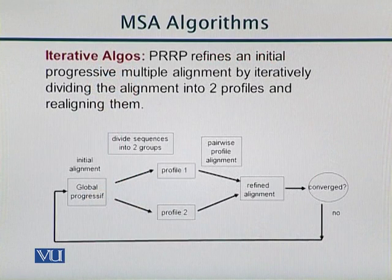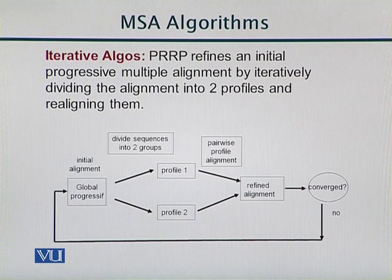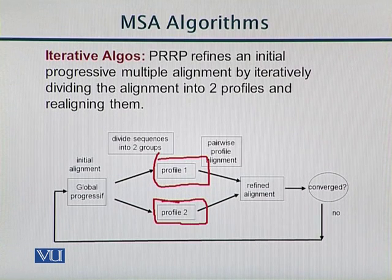There are different methods available for iterative algorithms. Number one is PRRP, which is basically an iterative alignment technique. In this case, the given sequences are converted into two profiles. Profile 1 and Profile 2 are based on the division of the input sequences, and then we try to find out pairwise profile alignment.